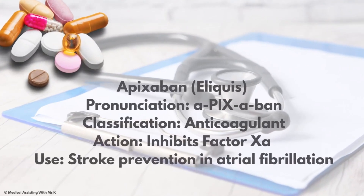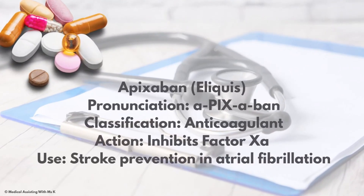Eliquis is also a blood thinner. The generic for Eliquis is apixaban. Make sure you're looking at the pronunciation of these medications carefully. Classification: anticoagulant. Action: it inhibits factor Xa, which is the enzyme involved in blood clotting. The use is stroke prevention in patients with atrial fibrillation.